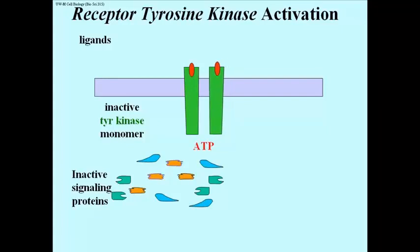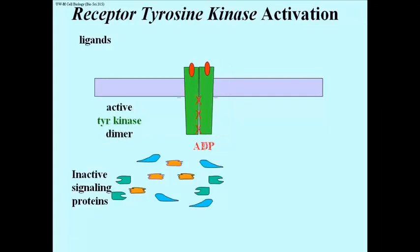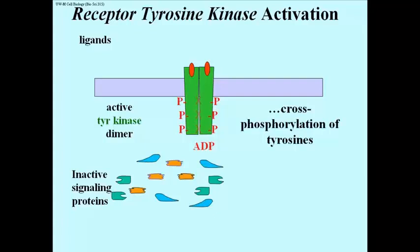After ligand binding to monomeric membrane receptors, two ligand-bound monomers come together. This activates a kinase activity that phosphorylates each monomer at several tyrosines.